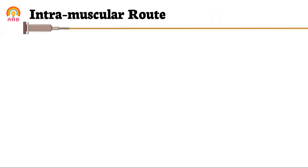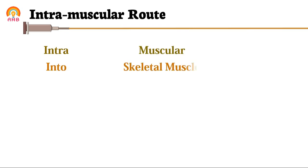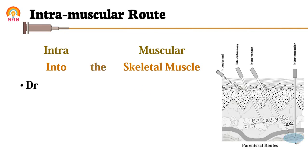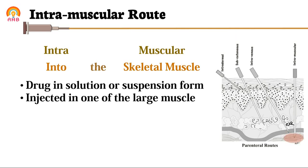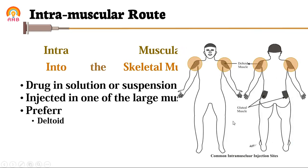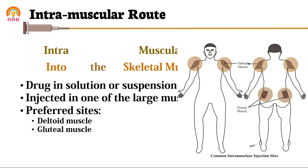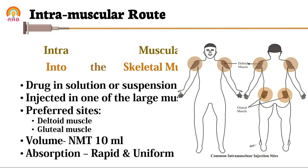The third injection route is the intramuscular route. This word came from intra meaning into, and muscular meaning skeletal muscles. In this route, drug in solution or suspension form is injected into one of the large muscles. The most preferred sites are deltoid muscles in the upper arm and gluteal muscles in the hip region. Not more than 10 ml of drug can be administered by this route. Absorption from this route is rapid and uniform — giving both a rapid and a consistent effect.